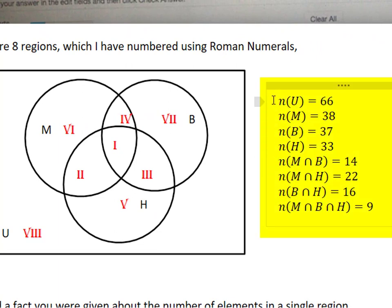I've also summarized right here what they're telling us about each of these sets, where M is the number of students who like Mozart, B is the number of students who like Beethoven, and H is the number of students who like Haydn. And of course U is the universal set. So they told us the total number of students, the number in the whole universal set, the whole rectangle, is n(U) = 66. The number that likes Mozart is 38. The number that likes Beethoven is 37. Haydn 33.